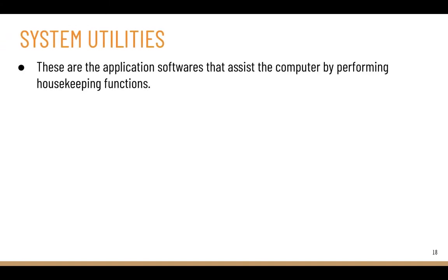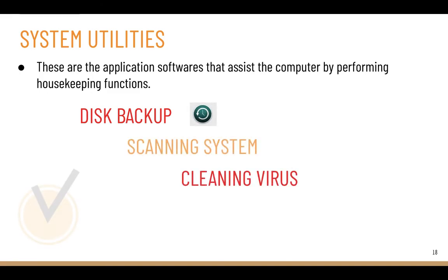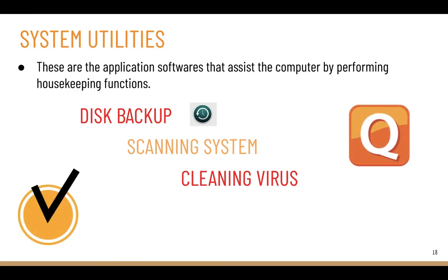Next are system utilities. These are application softwares that assist the computer by performing housekeeping functions — general maintenance activities like disk backup, scanning the computer system, cleaning viruses using antivirus softwares like Norton and Quick Heal, and arranging information properly. System utilities help in managing these housekeeping functions of a computer.